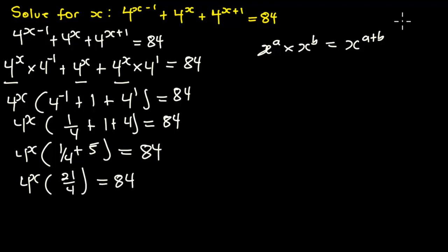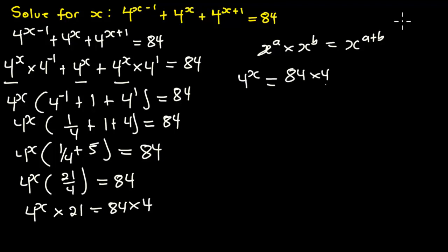We have a fraction, so we multiply both sides by the LCM, which is 4. This gives us 4 exponent x multiplying 21 equals 84 times 4. So 4 exponent x equals 84 times 4 all over 21, which is 336 over 21.